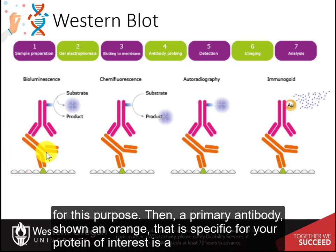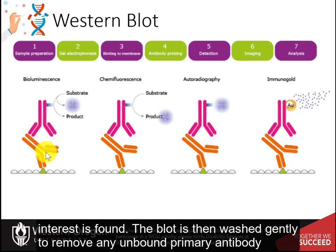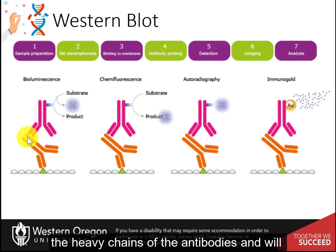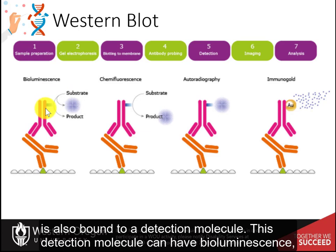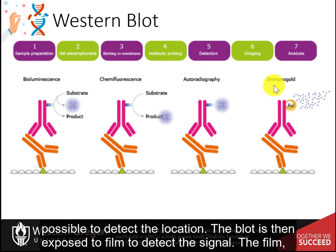Then, a primary antibody — shown in orange — that is specific for your protein of interest is incubated with the blot. It will bind to the blot only where your protein of interest is found. The blot is then washed gently to remove any unbound primary antibody, and a secondary antibody — shown in pink — is added to the blot. This antibody is specific for the heavy chains of antibodies and will bind to the heavy chain regions of your protein-specific antibody. This secondary antibody is also bound to a detection molecule, which can have bioluminescence, chemifluorescence, radioactivity, or colored properties such as immuno gold, making it possible to detect the location. The blot is then exposed to film to detect the signal.